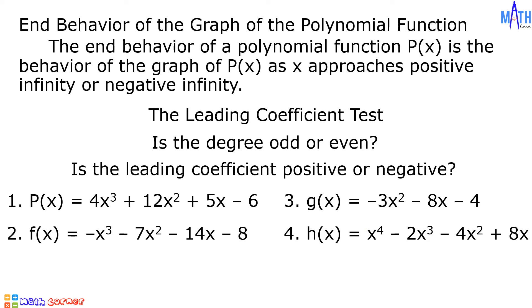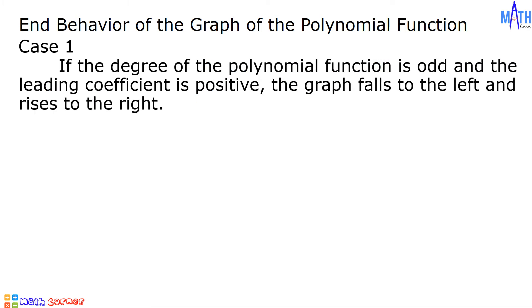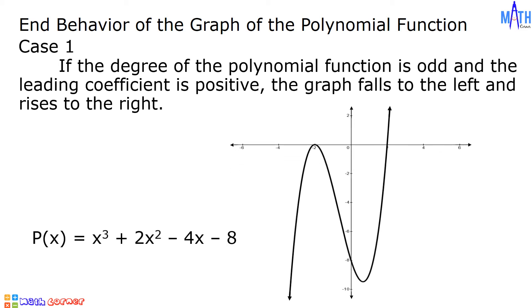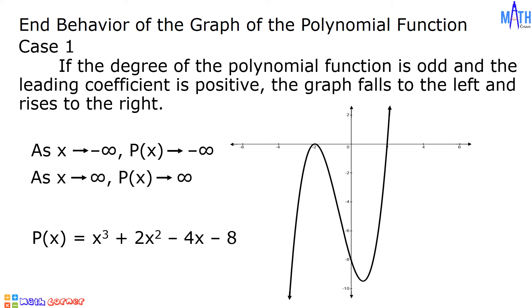Using these four cases, let us discuss the end behavior of the graph of a polynomial function. Case number one: if the degree of the polynomial function is odd and the leading coefficient is positive, the graph falls to the left and rises to the right. Consider p of x equals x cubed plus 2x squared minus 4x minus 8. Since the degree is odd and the leading coefficient is positive, as x approaches negative infinity, p of x approaches negative infinity. As x approaches positive infinity, p of x approaches positive infinity.